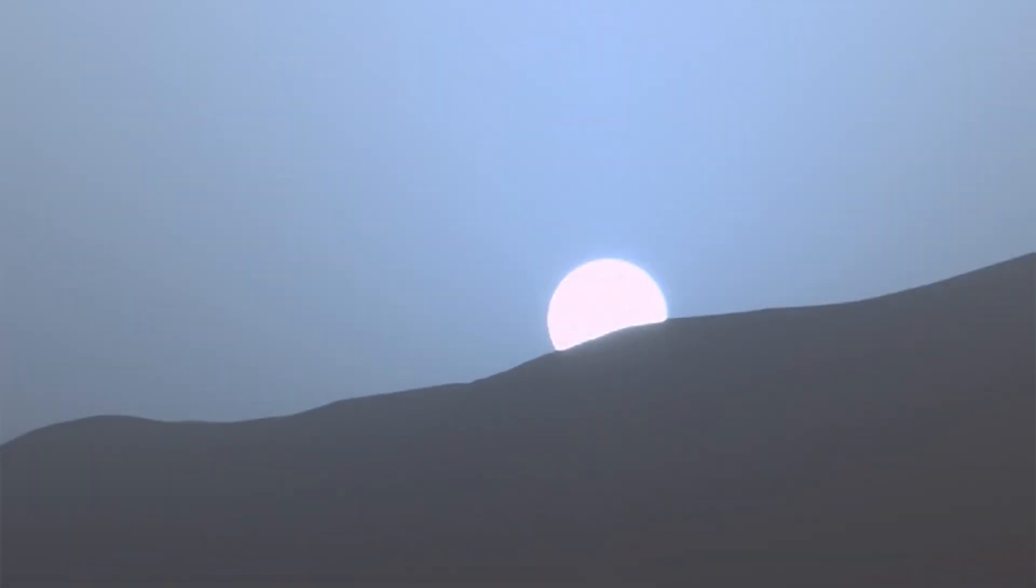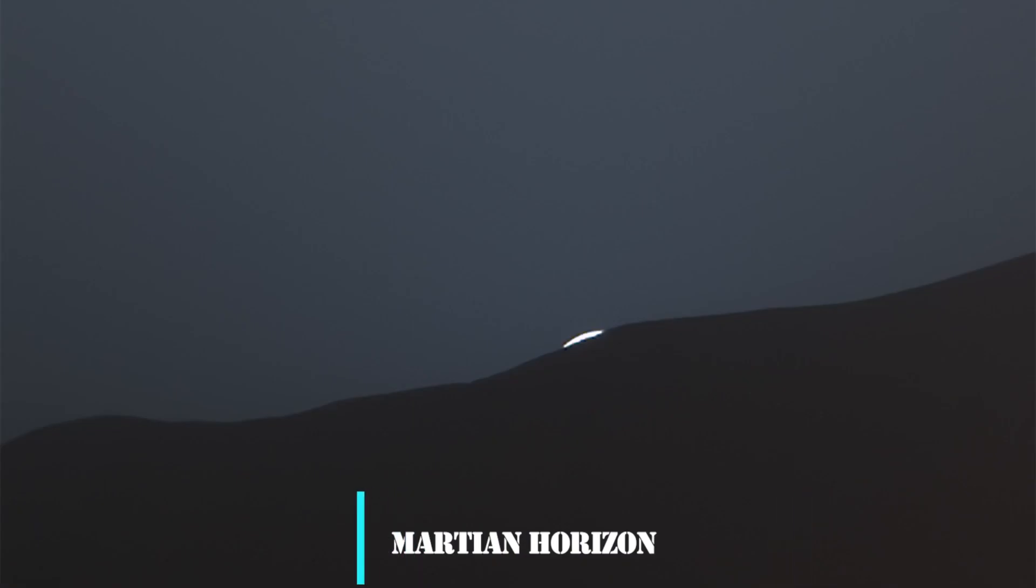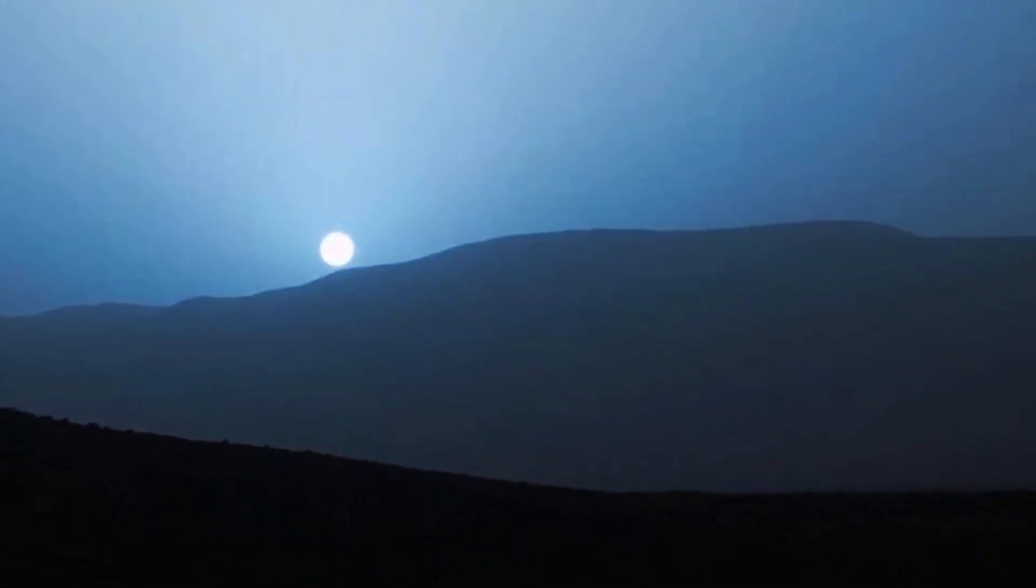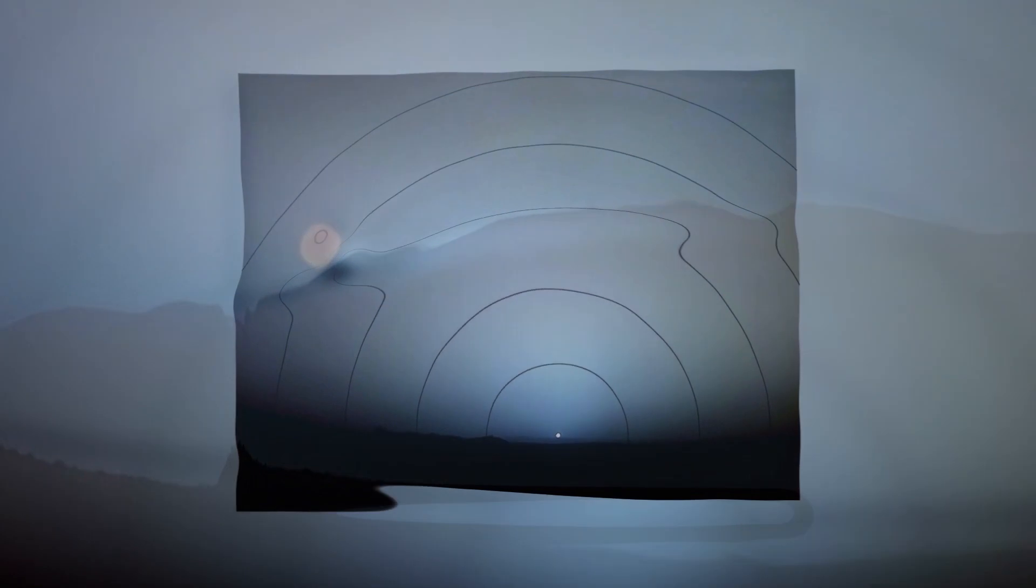These particles scatter the sunlight, producing a captivating blue glow as the sun descends below the Martian horizon. It is a genuinely magical display that serves as a reminder of the wonders that await us in the vastness of space.